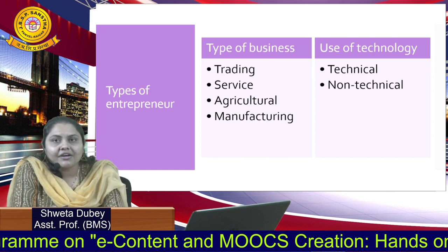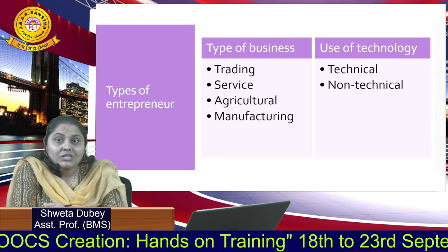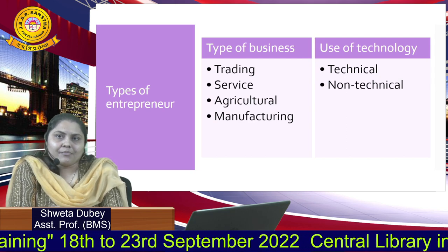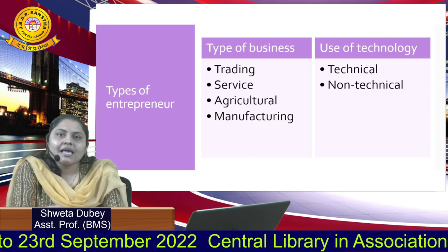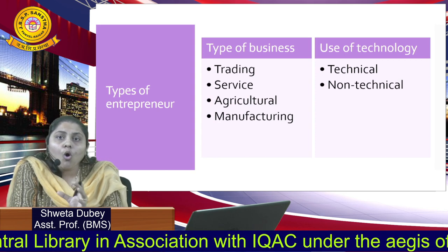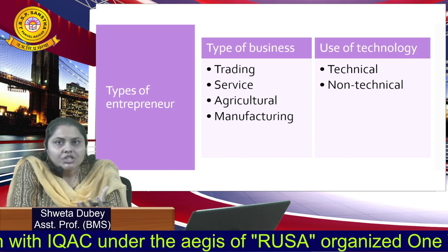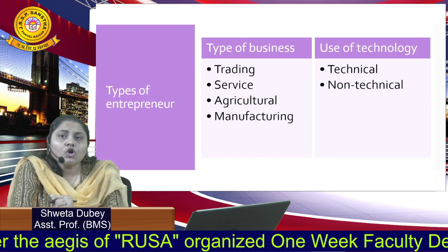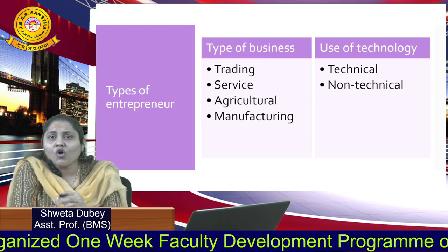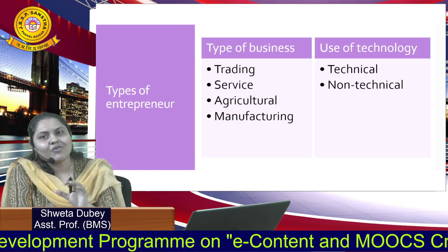The last type on the basis of business is the manufacturing entrepreneur — someone who is dealing with the production of goods and services, who comes up with new products and services and produces them. The next type on the basis of which we classify entrepreneurs is use of technology. Firstly, we have the technical entrepreneur — someone involved in all the technical aspects of business, who will come up with new production processes and new machinery. Next is the non-technical entrepreneur — someone who does not deal with the technical enterprise but is involved in the marketing and promotional aspects of the business.